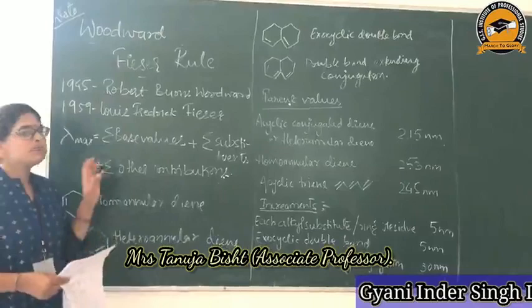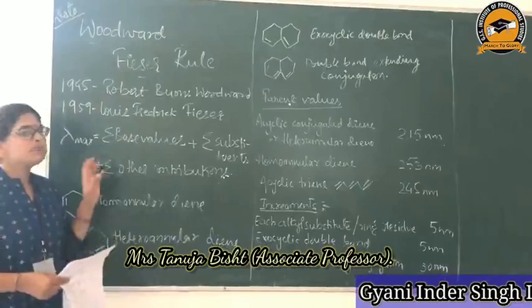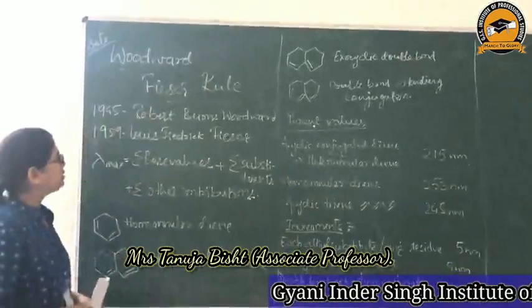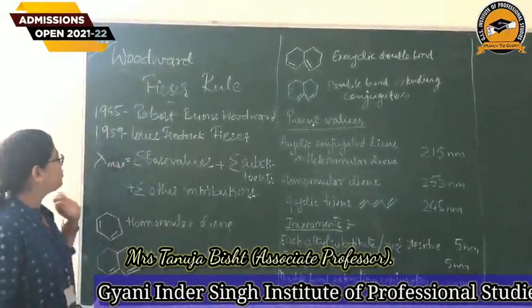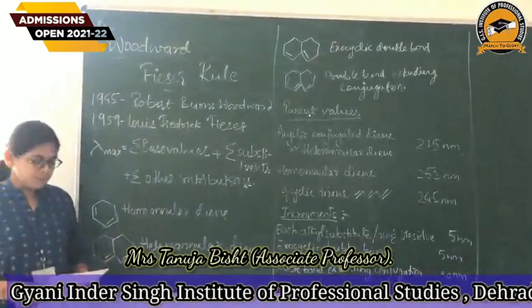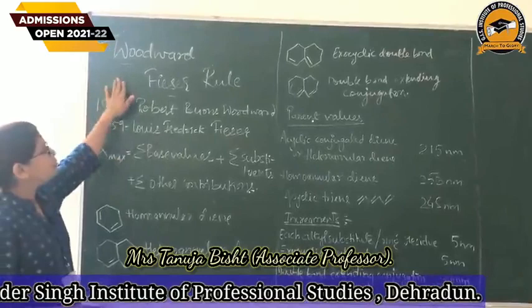Today we will be discussing about a small topic, that is the Woodward-Fieser Rule. In 1945, scientist Robert Burns Woodward gave some rules for correlating wavelength, that is structure. After that, in 1949-1959, Louis Frederick Fieser modified these rules with more experimental data, and combined together, both the rules are called as the Woodward-Fieser Rule.